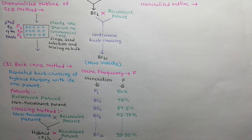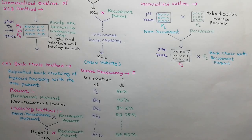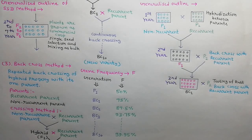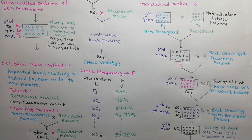We can describe the back cross method by a generalized outline. In the first year, parents P1 and P2 are hybridized to produce hybrid seeds. In the second year, hybrid seeds are grown to produce F1 generation, and F1 progenies are back crossed with the recurrent parent P2. In the third year, BC1 generation is raised and rust tests are performed, and BC1 progenies are back crossed with recurrent parent P2. From the fourth to seventh year, BC2, BC3, BC4, and BC5 generations are raised by back crossing with P2 in each year. In the eighth year, BC6 generation is raised, rust tests are performed, and resistant plants are self-pollinated.